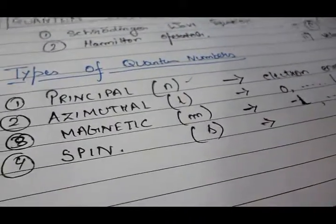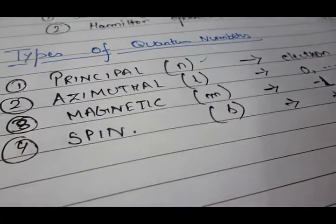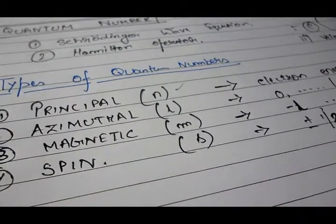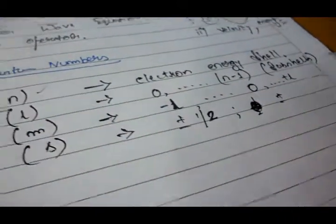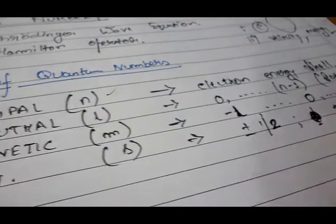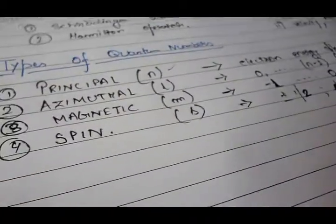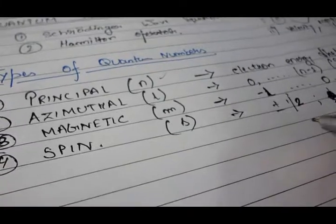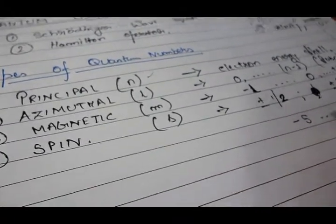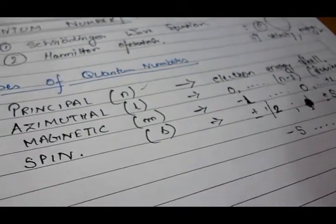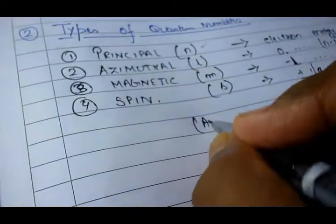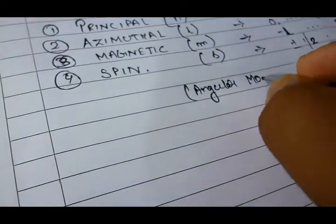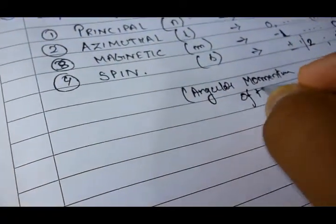Now, the spin quantum number, we always say it is plus minus half. What is the meaning of this statement plus minus half? We say S. So this will range from everything. What is this plus minus S? Plus minus S is actually ranging from minus S continuing till plus S. This is denoting the angular momentum of the electron. This denotes the angular momentum of the electron within its orbital.